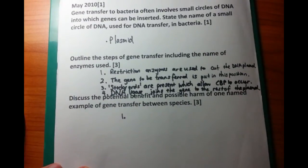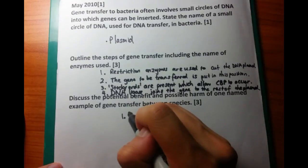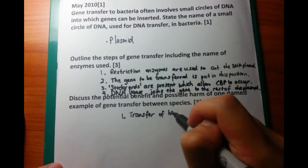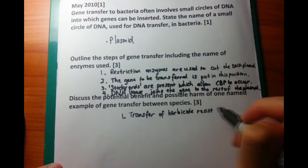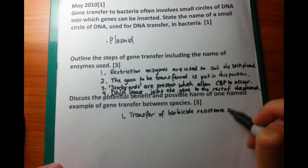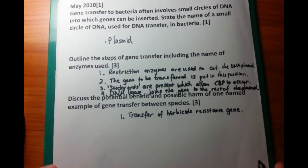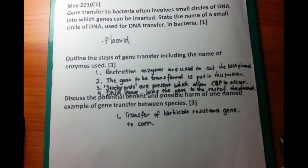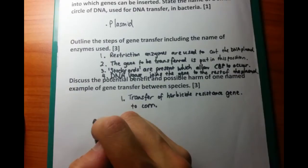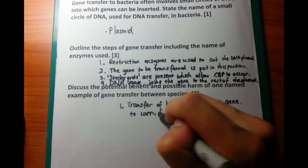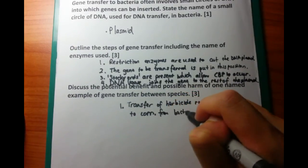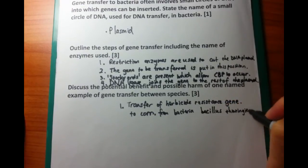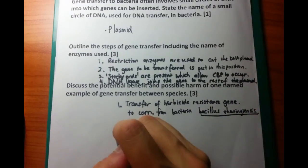The third question asks to discuss the potential benefit and possible harm of one named example of gene transfer between species. The key thing is that you need to read the question and provide a named example. Here we discuss the transfer of a herbicide resistance gene to corn from the bacteria Bacillus thuringiensis. You need to remember the name of the source organism and the gene.